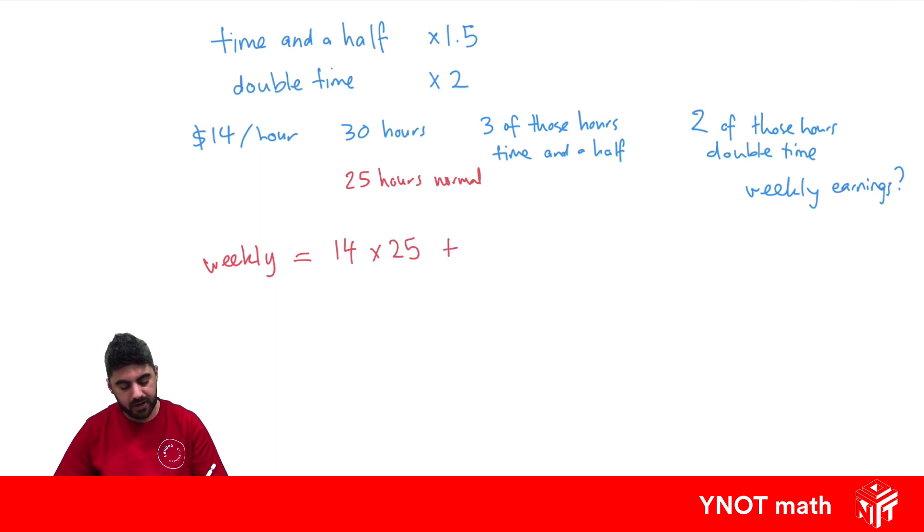Plus let's do our time and a half, so that's your rate multiplied by 1.5 and multiply that by the amount of hours you work at time and a half, which is 3. Now for our double time, it's our rate multiplied by 2 for double time, multiply the amount of hours you work double time, which is 2.